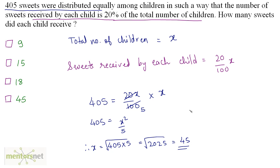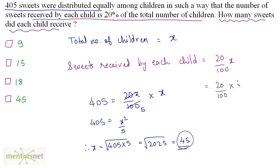X = 45, meaning the number of children is 45. Each child received 20% of 45, which is (1/5) × 45 = 9 sweets. Option A is the right answer.